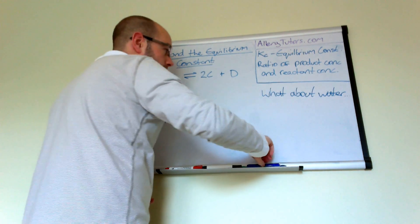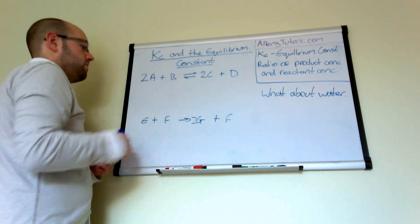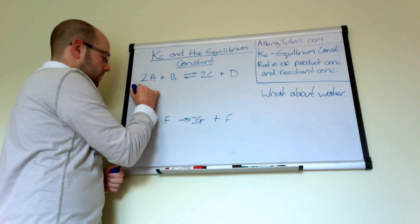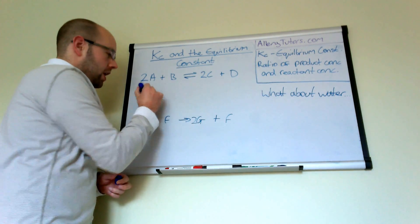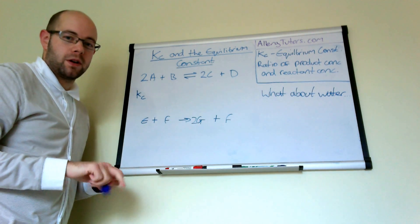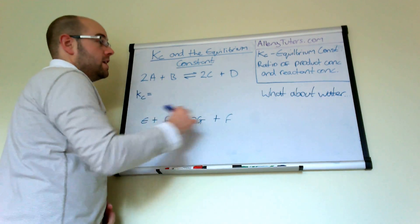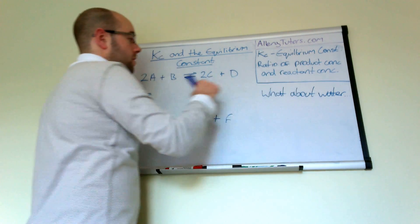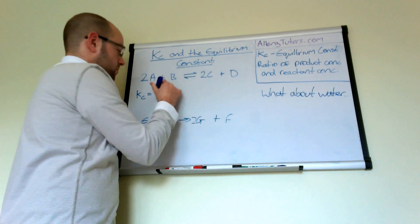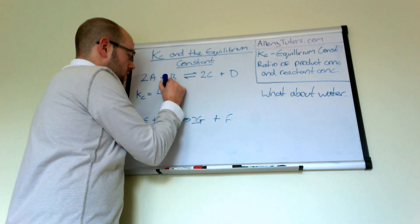So we're going to write our expression. So we have a very generic example here and it's more than likely you'll be given an actual chemical equation that you have to work out. So KC is really easy. You take your product on the top, so this is your product which is going to be the concentration of C